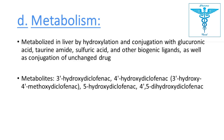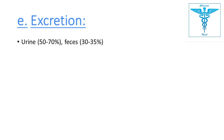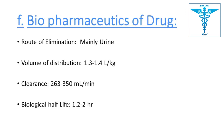Metabolites include 3-hydroxydiclofenac, 4-hydroxydiclofenac, 5-hydroxydiclofenac, and 4,5-dihydroxydiclofenac. Volume of distribution is 1.3 to 1.4 liters per kg. Clearance is 263 to 350 ml per minute.